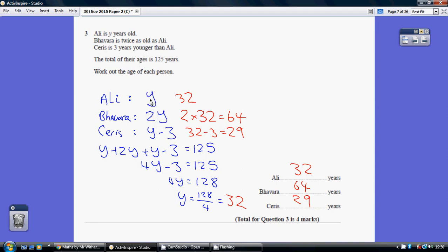Now, we're told that these three ages together add up to 125. So, this plus this plus this equals 125. Now, you've constructed your own equation, we now need to solve this.